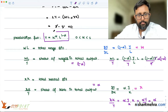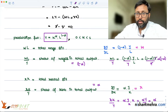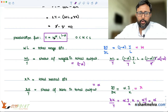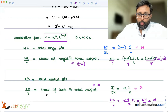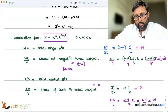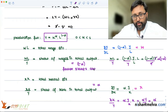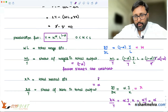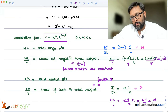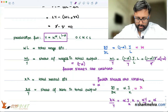This is your production function. Alpha is the share of rent — or share of capital — in total output, and 1 minus alpha is the share of wages, or share of labor, in total output. So what this tells us is that the factor shares are constant: alpha is the factor share of capital, and 1 minus alpha is the factor share of labor.